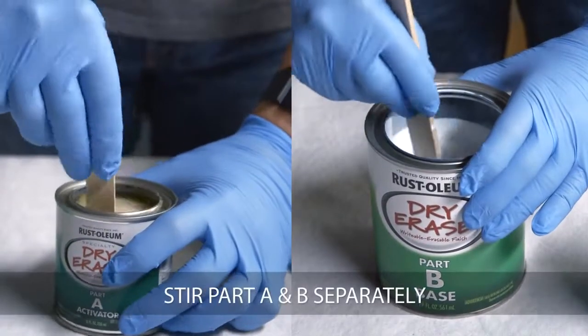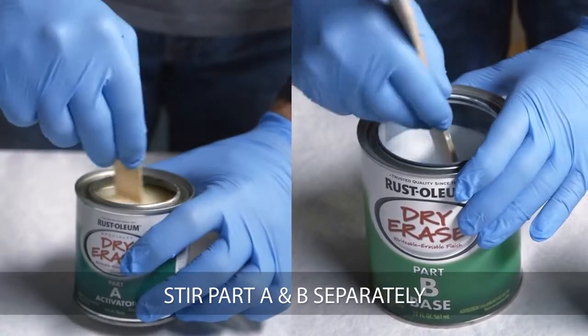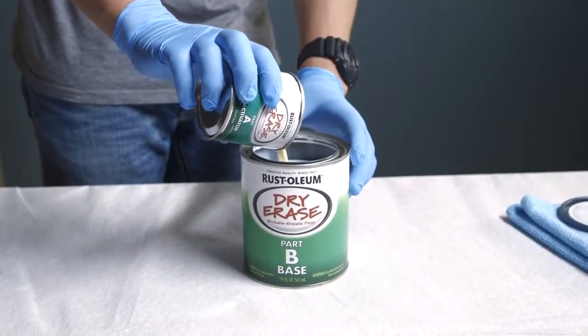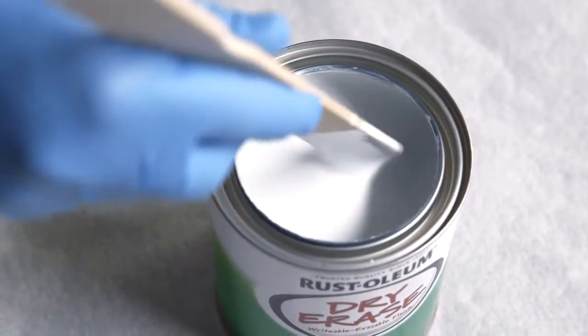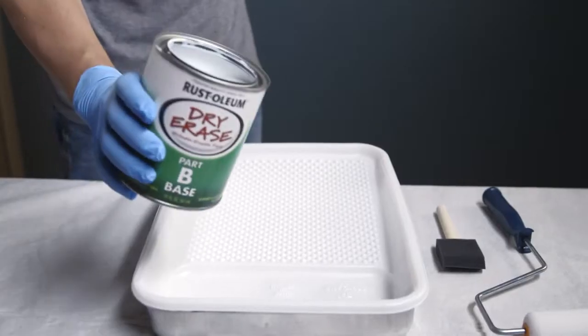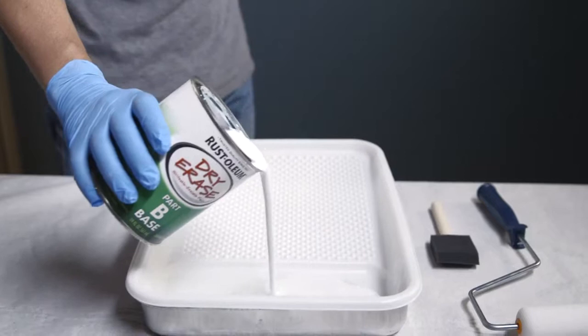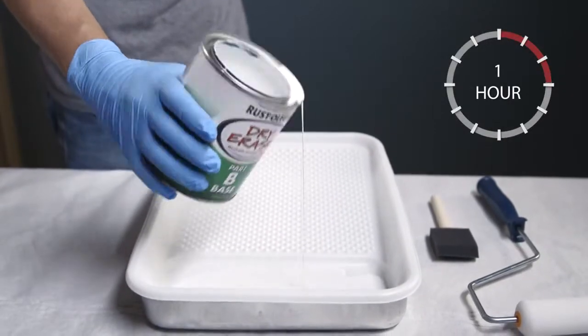Begin by stirring Part A and Part B separately before mixing. Next, pour Part A into Part B and stir thoroughly until paint is uniform in color. Once mixed, it is important to begin applying dry erase paint immediately so it can be fully applied within one hour of mixing.